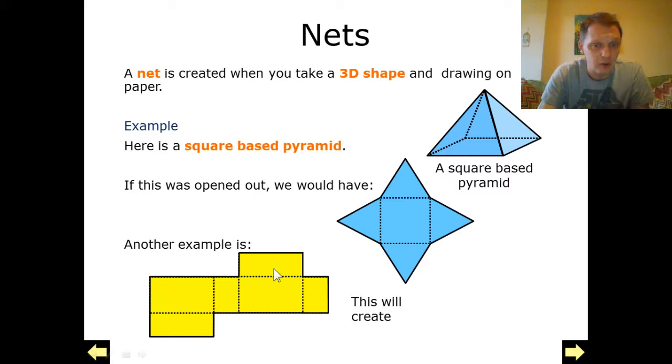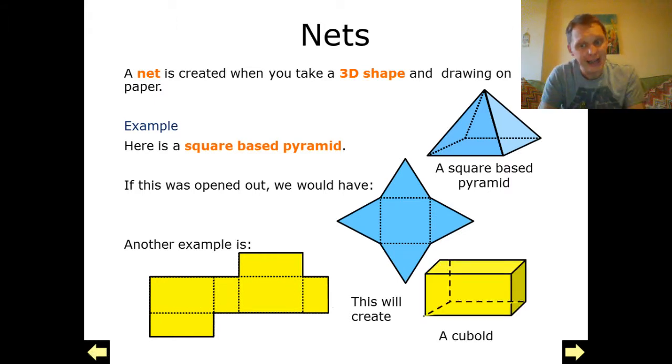Now here's another example. I've got some rectangles all the way across this. I've got one, two, three, four, five, six rectangles, and this will actually create a cuboid when we put all this back together.